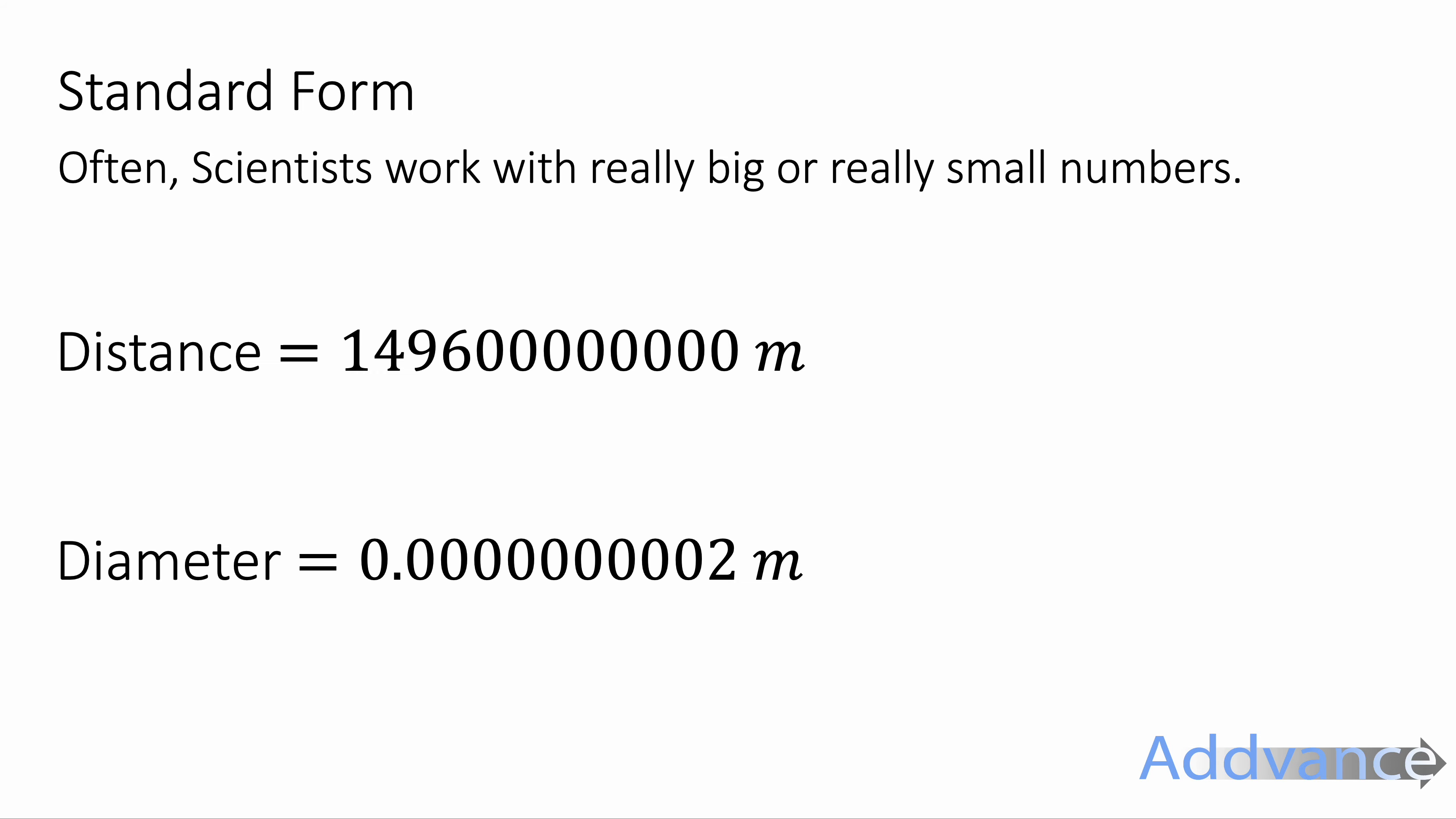Often scientists work with really big or really small numbers. For example, the distance from the Earth to the Sun is 149,600,000 meters, and also the diameter of an atom will be 0.0000000002 meters.